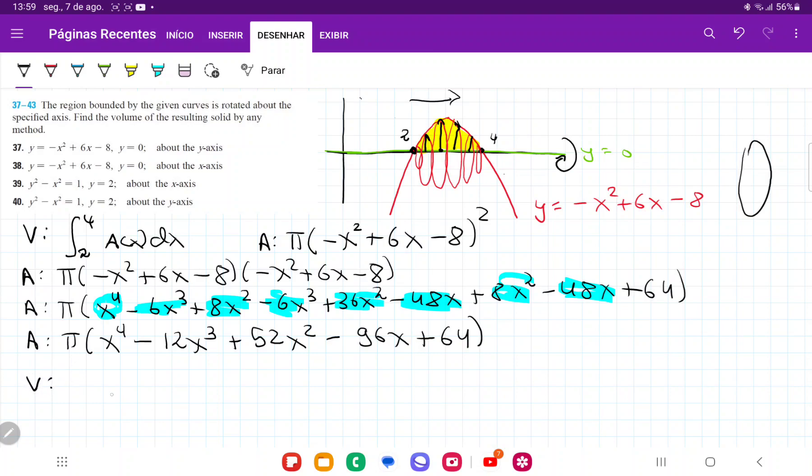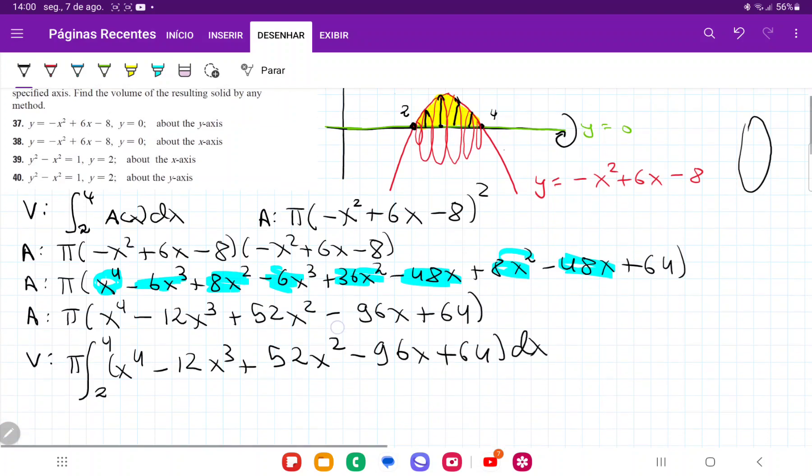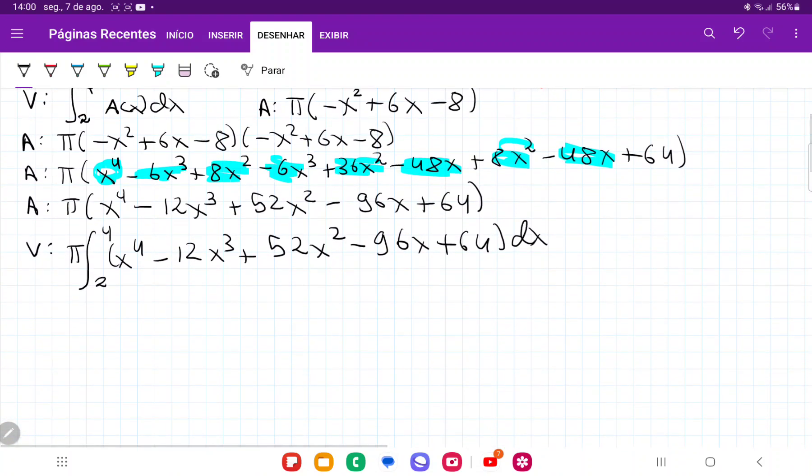So our volume is going to be the sum of this area. So the sum from 2 to 4 of π goes outside, and then we're integrating all this stuff. So we're integrating x⁴ - 12x³ + 52x² - 96x + 64, all of this times dx. And so once we have this, we are ready to just take the antiderivative.